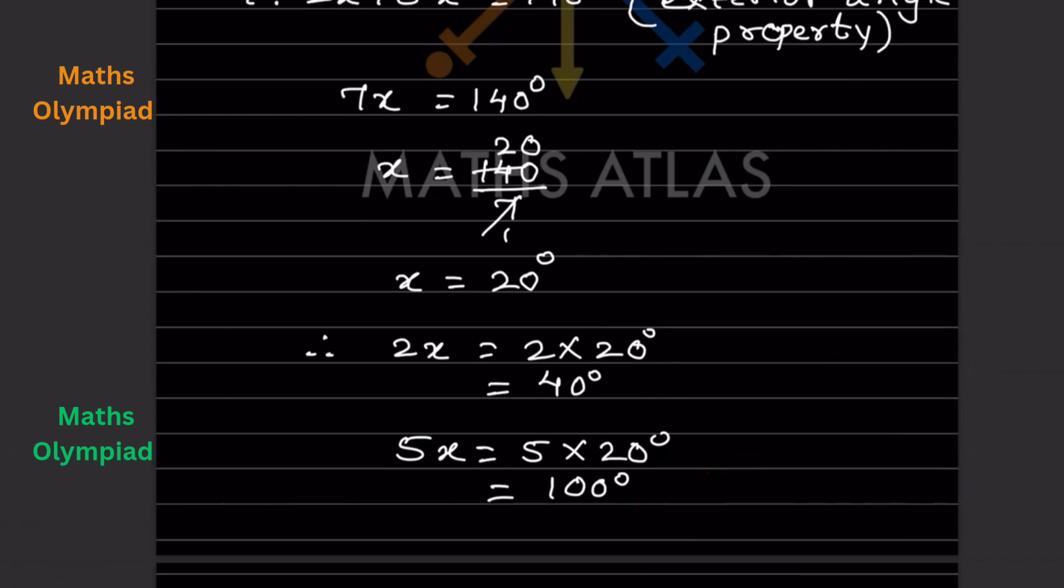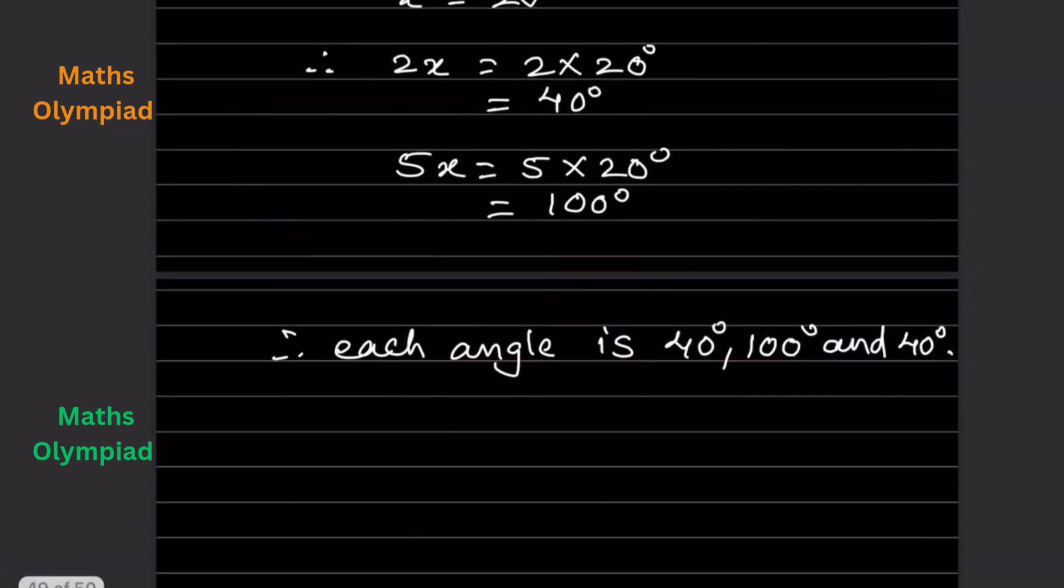So now we have the three angles. Therefore, each angle is: one is 40°, another is 100°, and the third is 40°. When you add these together, it equals 180°.